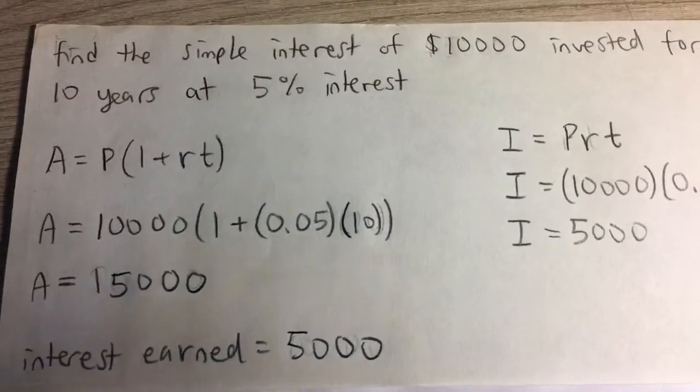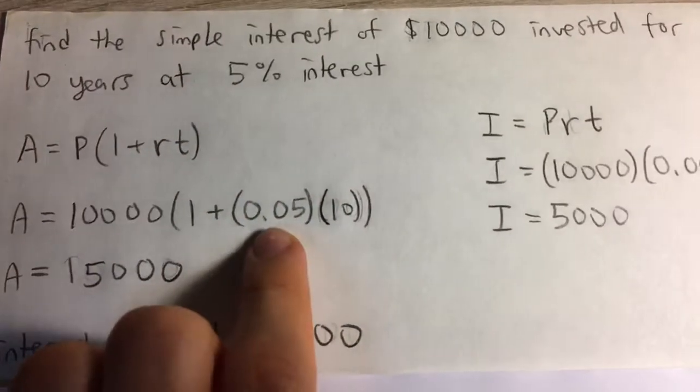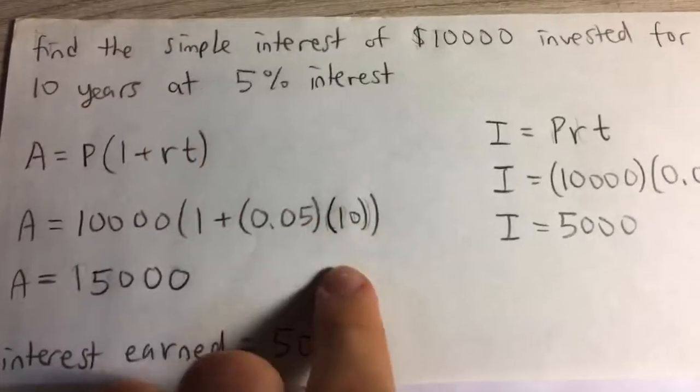In other words, you divide by 100 or move the decimal point two places to the left. So we get 0.05 times 10 years.